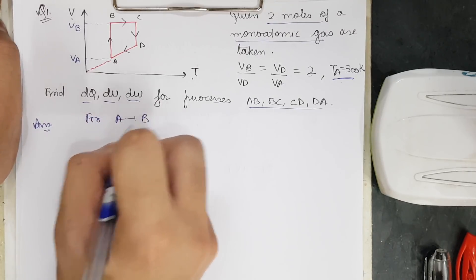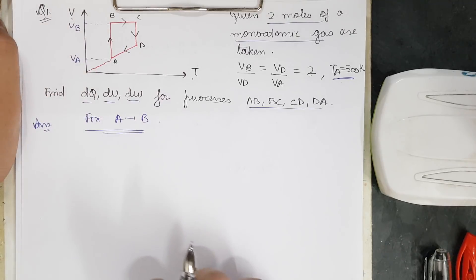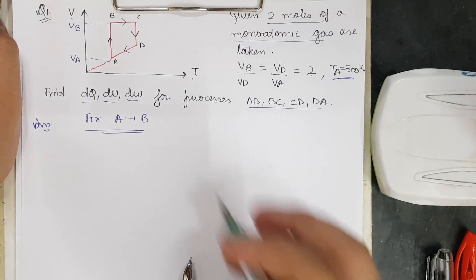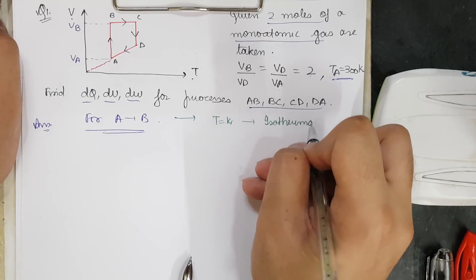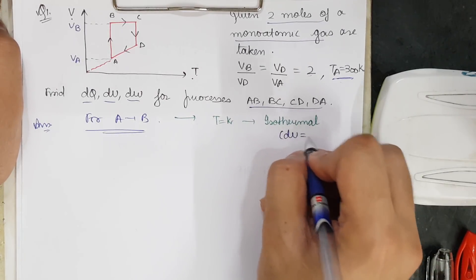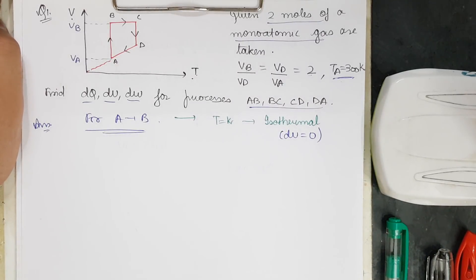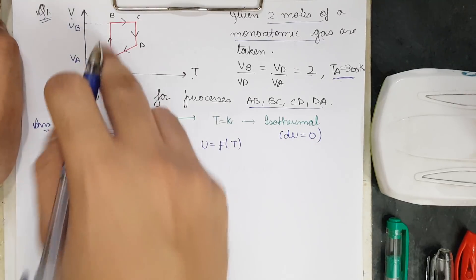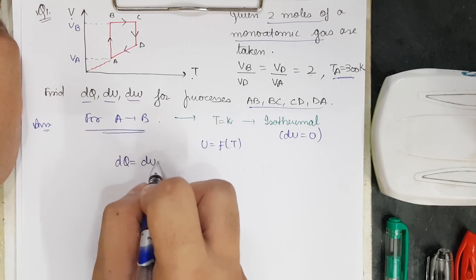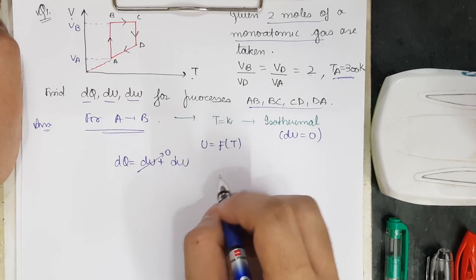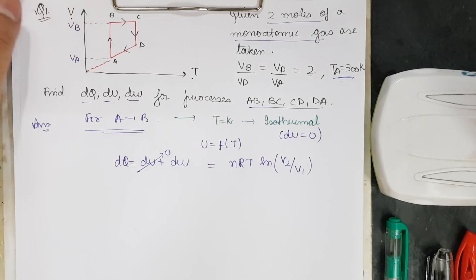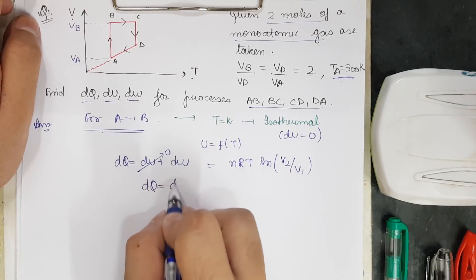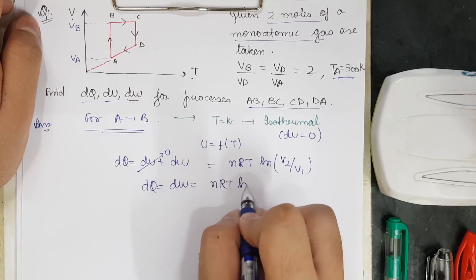For process A→B, we need to decide what kind of process it is. Going from A to B, we can see that the temperature remains constant on this line, so it is an isothermal process. Isothermal process implies dU = 0, because for ideal gases U is a function of temperature only. So dQ = dW = nRT·ln(V2/V1), which is the work formula for isothermal processes. Thus dQ = dW = nRT·ln(VB/VA).